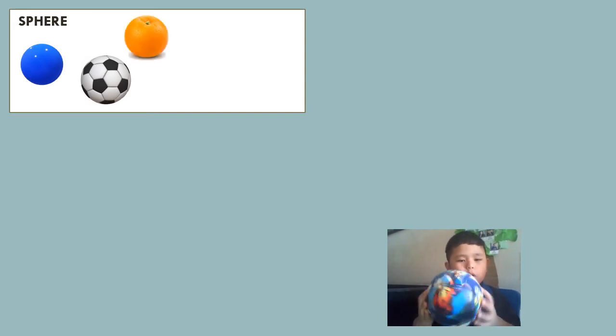But instead of flat, it is a solid shape or a blown up circle. This is the shape of balls, orange, and the earth.